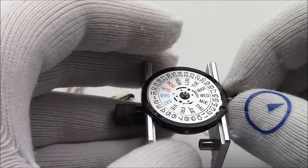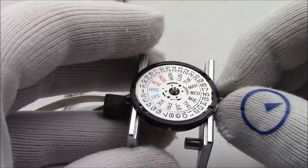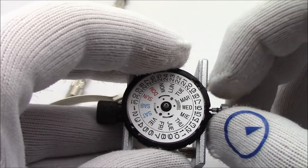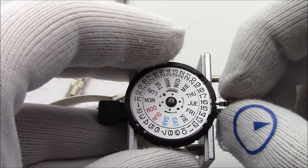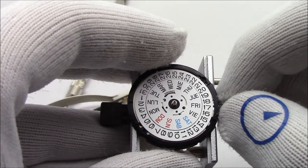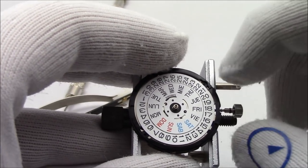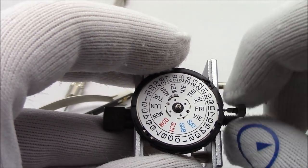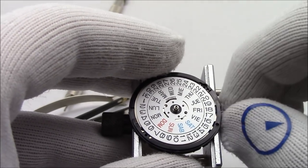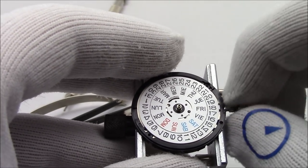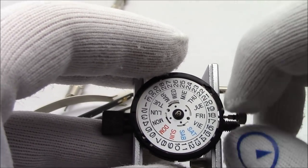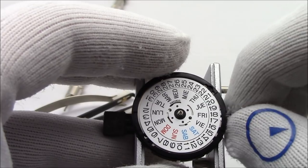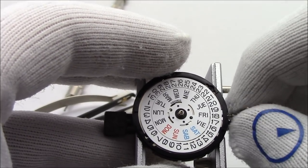So now the dial is off, and the movement is in a movement holder. So you can see now if I pull the crown out one click, one way spins the day, one way spins the date. And if I pull out two clicks and I rotate the time, you can see the center pivot is turning clockwise. And after 24 hours, the date wheel will advance. I should be getting there soon.